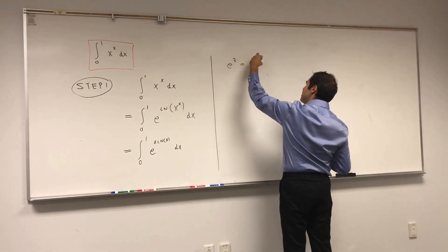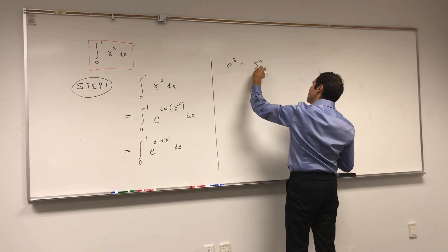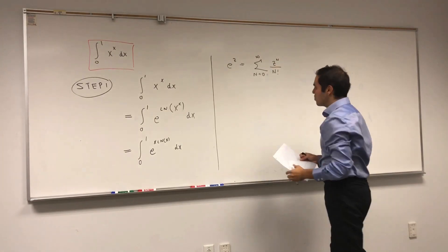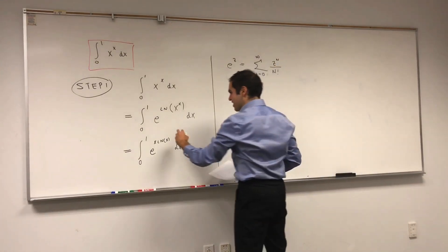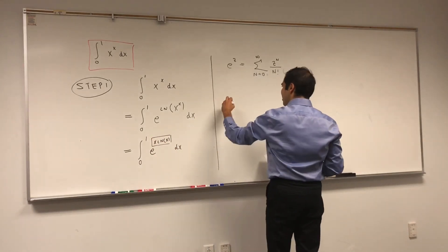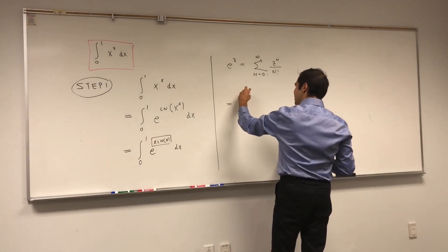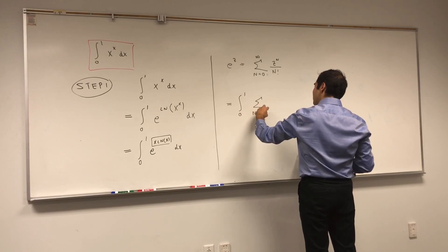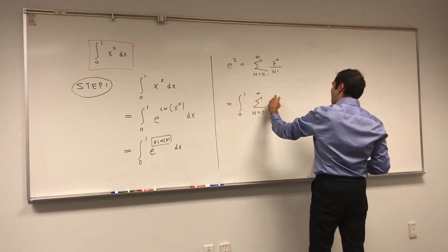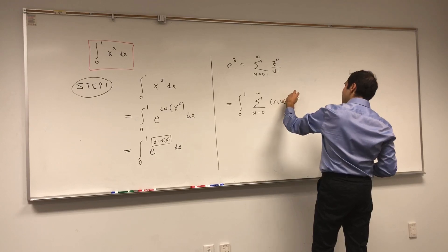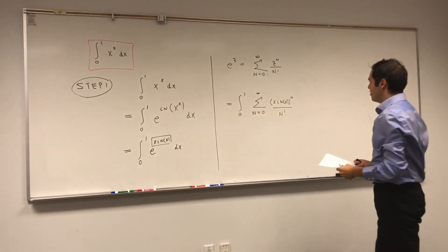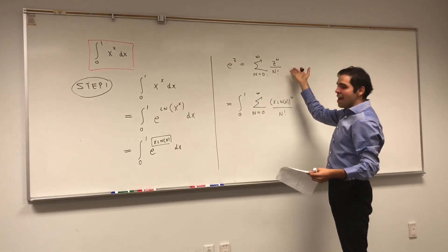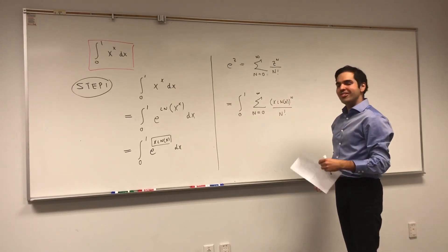More precisely, e to the z is just the sum from zero to infinity of z to the n over n factorial. Let's use this and plug it into the integral, which tells us that our integral equals the integral from zero to one of the sum from n equals zero to infinity of x ln of x to the n over n factorial. This is perfectly valid because the series is valid for every z, so we can plug in z equals x ln of x.